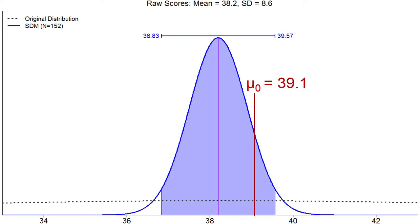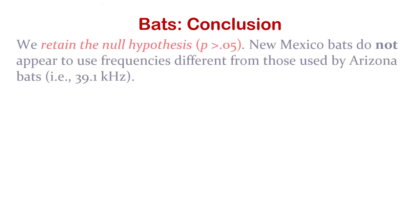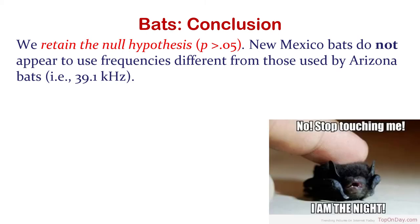The Arizona mean of 39.1 is right there — very much in the confidence interval — so we do not reject the null hypothesis. We retain it: New Mexico bats do not appear to use different frequencies from Arizona bats.